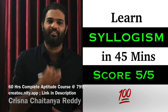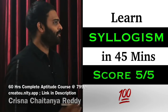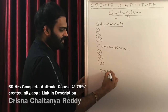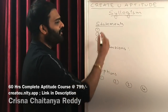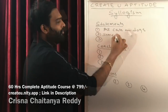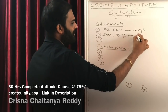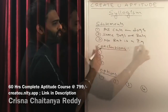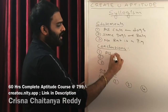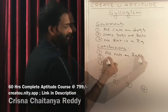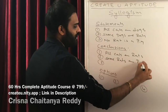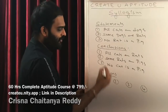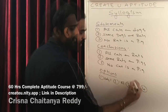Let us start one of the very important and interesting topics: syllogism. In syllogism, there are statements given followed by conclusions and options. Every statement looks very simple — for example, 'all cats are dogs,' 'some dogs are rats,' 'no rat is a pig.' Conclusions will be very similar to statements, like 'all cats are rats,' 'some rats are pigs,' 'no cat is a pig,' and then options: only one follows, one and two follows, only three follows, all three follows.